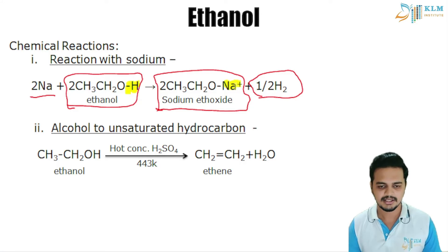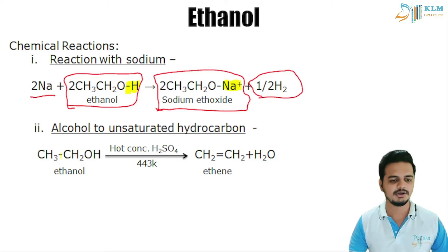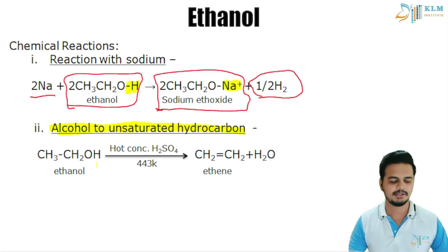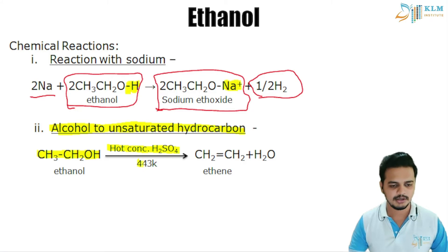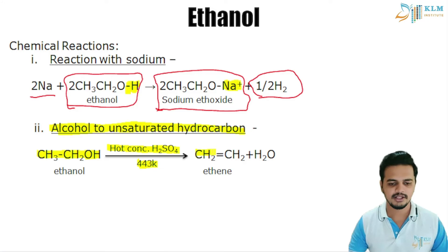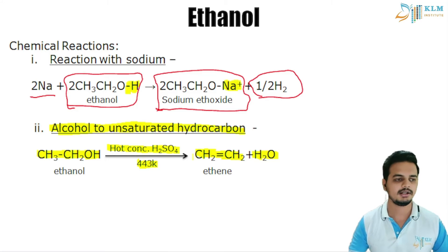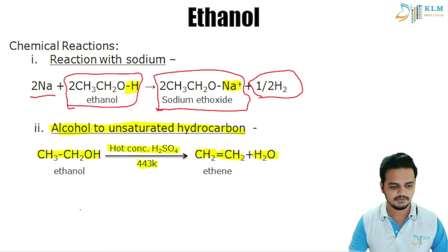Alcohol can be converted to an unsaturated hydrocarbon. We use ethanol with hot concentrated H2SO4 — sulfuric acid — at 443 Kelvin. When you heat ethanol to that temperature with H2SO4, the products are ethene and water.